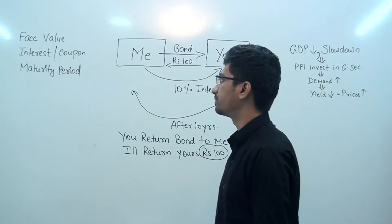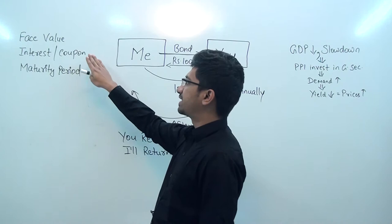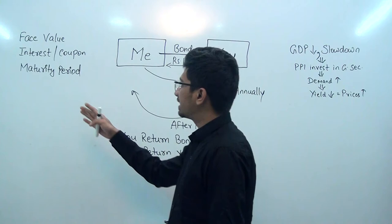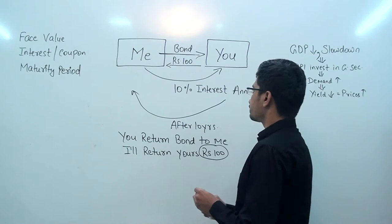Let's start. There are three things to understand about bonds: first is the face value, second is the interest — which you also see referred to in newspapers as the coupon — and the third is the maturity period. Let's start with the face value.